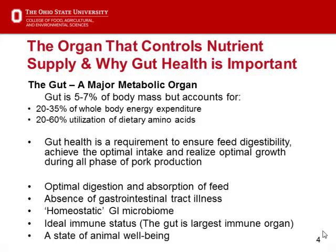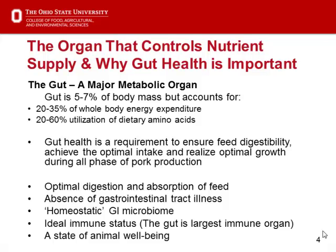Animal well-being is also listed as a key factor. When an animal goes through stress or a disease challenge, the well-being of that animal is challenged, and that changes their ability to grow. Starting from birth and working through to weaning, the diet changes and so does the GI tract.